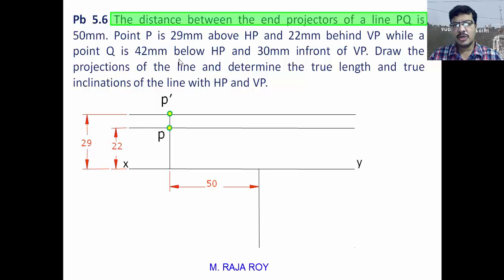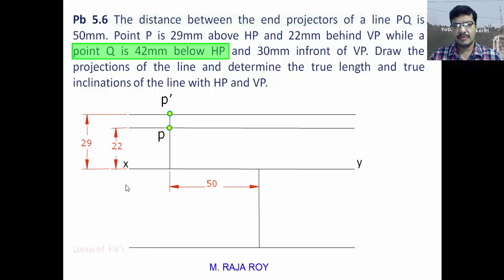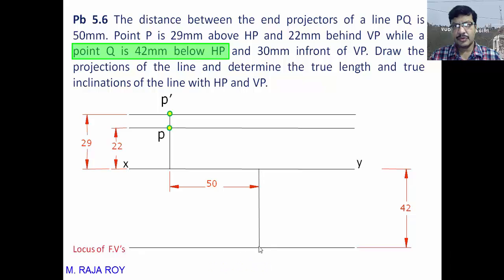Point Q is 42mm below HP, meaning its front view lies 42mm below the XY line. Draw a locus line 42mm below XY. The front view of Q lies on this projector at this locus — so Q dash is located somewhere here. This is the locus of the front views of Q.